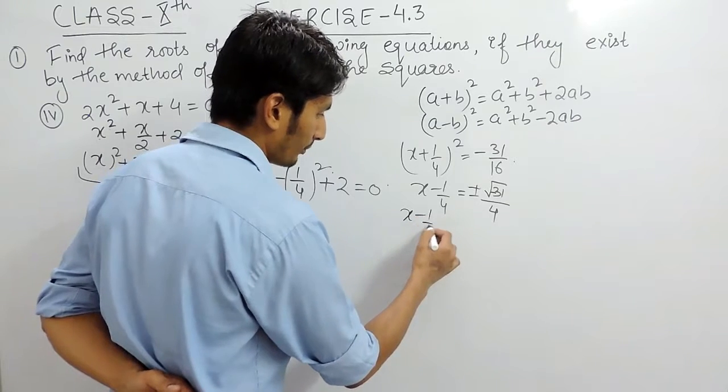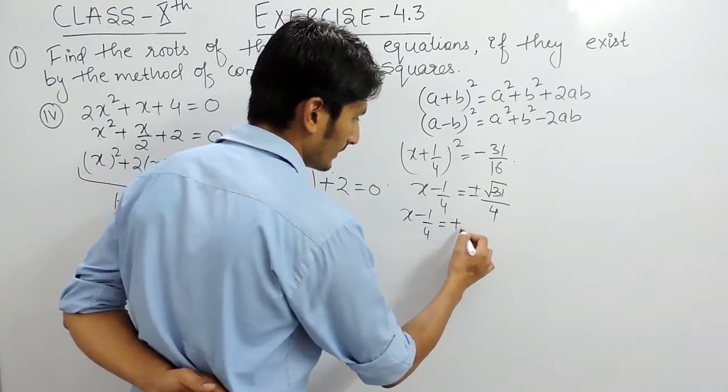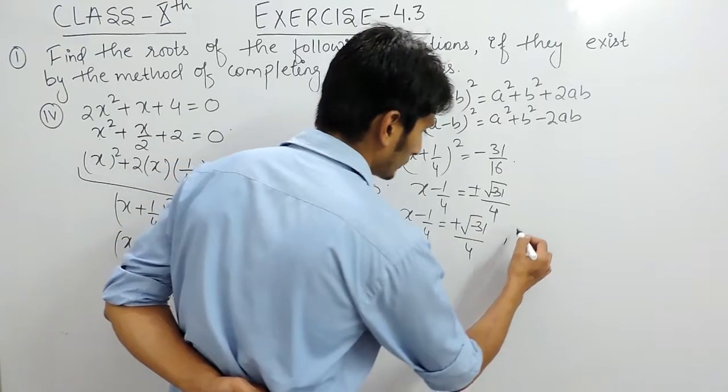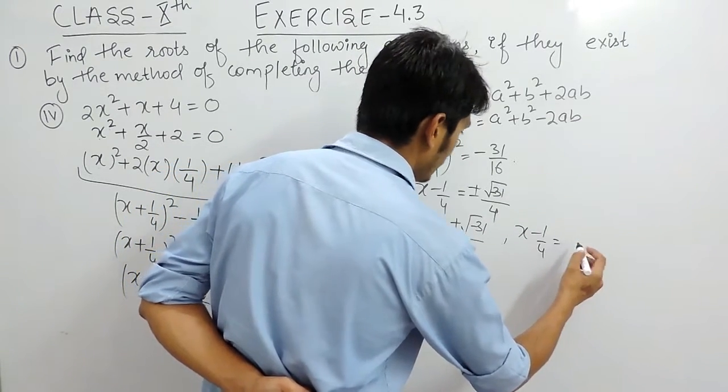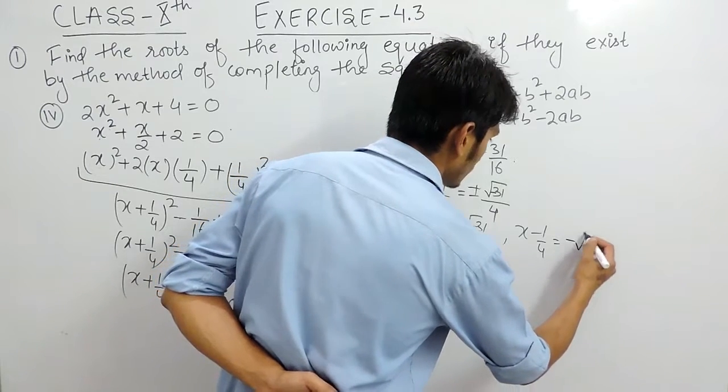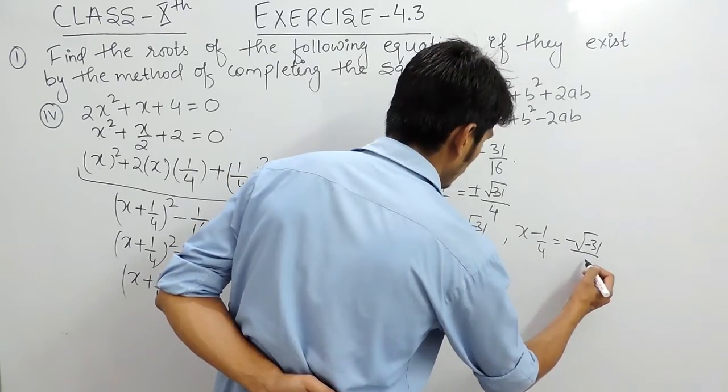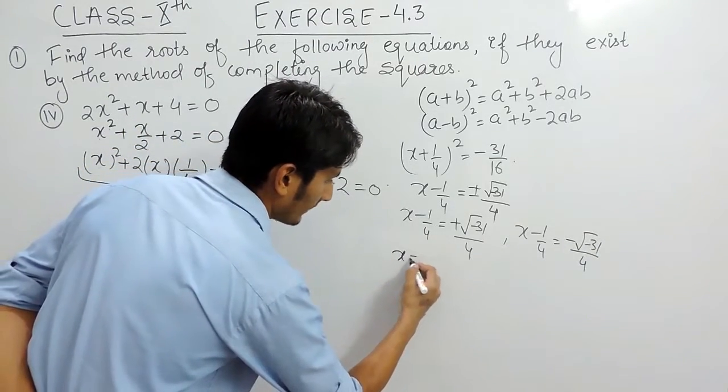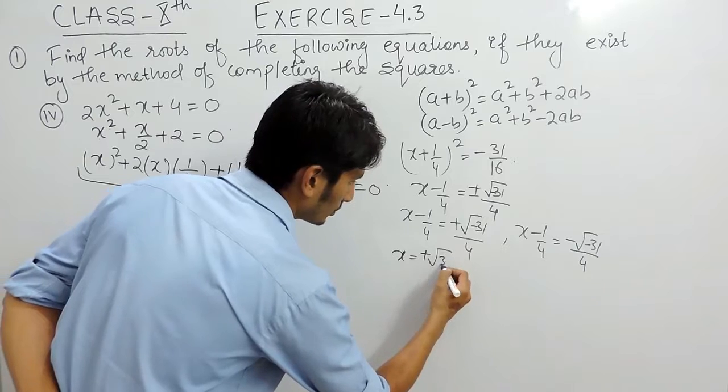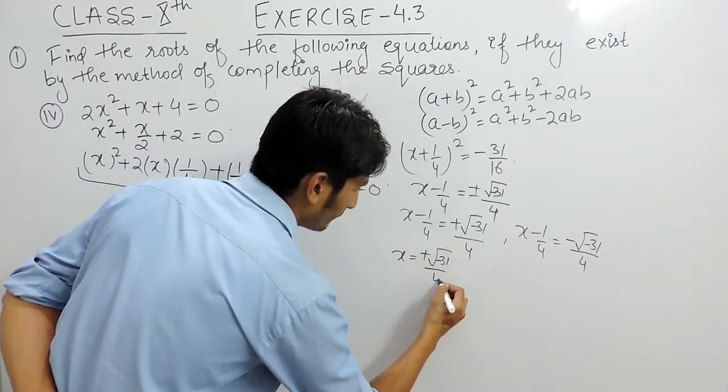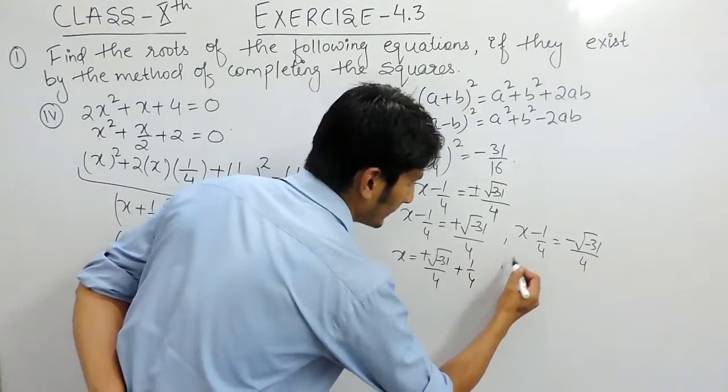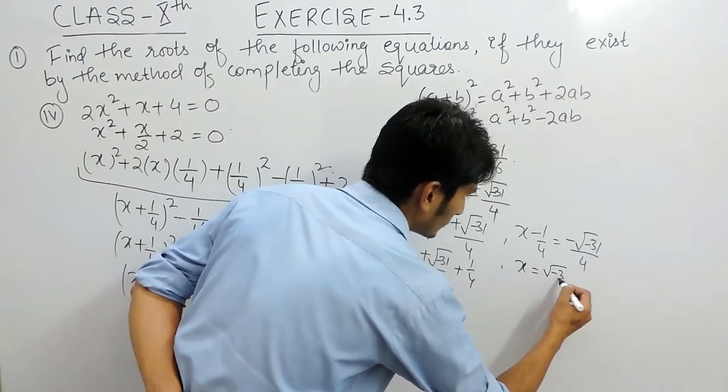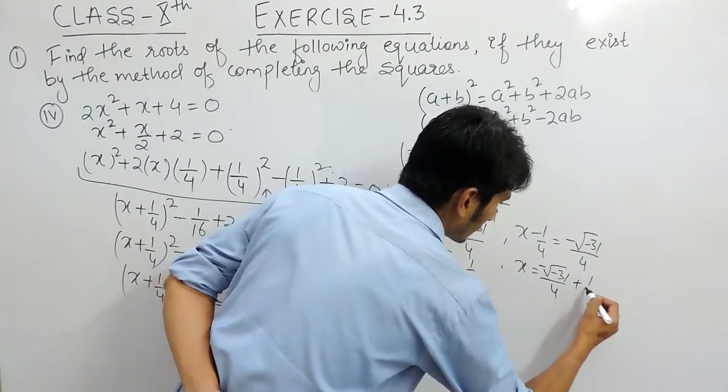So again the value of x plus 1 upon 4 can be equal to plus under root minus 31 upon 4 or the value of x plus 1 upon 4 can be equal to minus under root minus 31 upon 4. So shifting this constant to this side so the result of x will be plus root minus 31 upon 4 minus 1 upon 4 and similarly shifting this constant to that side so the result will be minus root minus 31 upon 4 minus 1 upon 4.